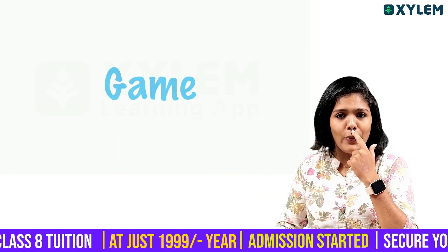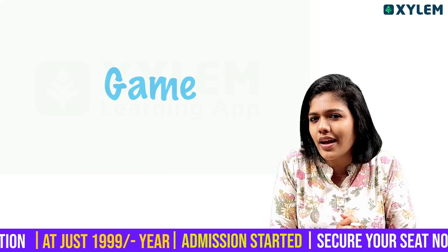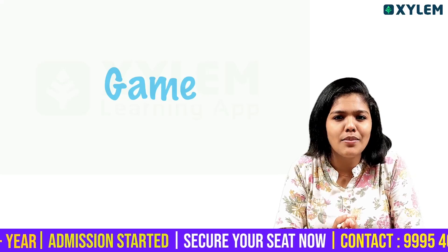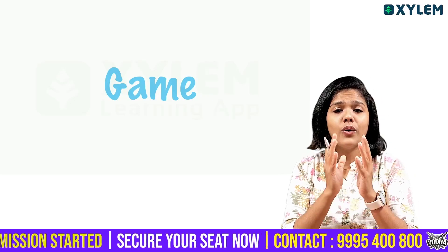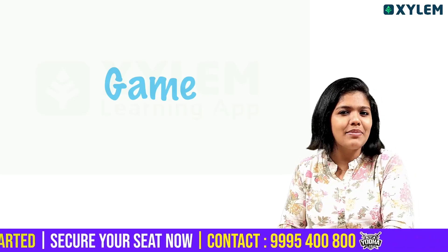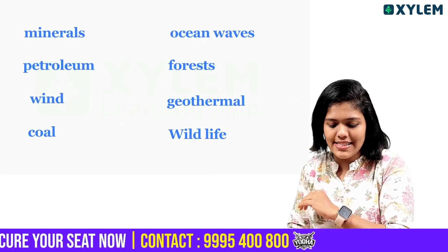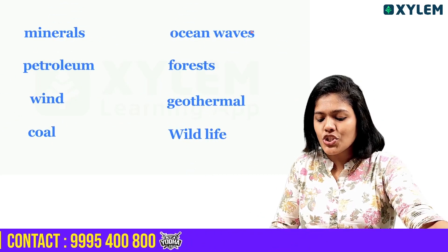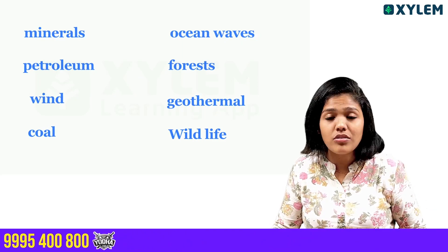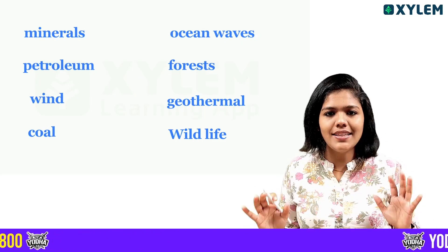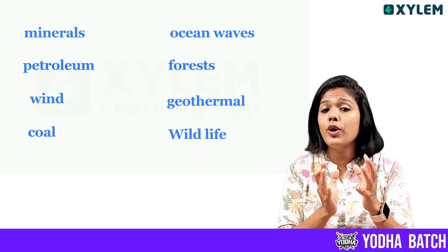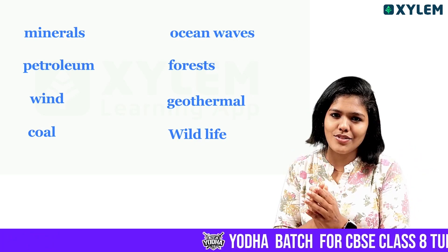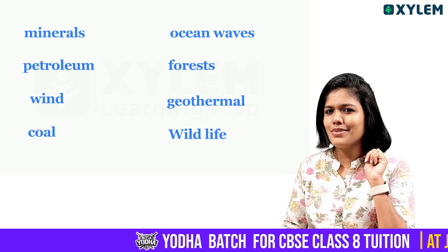Now, here are a few examples. You will see whether each is exhaustible or inexhaustible. Here you can see: minerals, petroleum, wind, coal, ocean waves, forest, geothermal, and wildlife. You will identify which are exhaustible natural resources and which are inexhaustible natural resources.